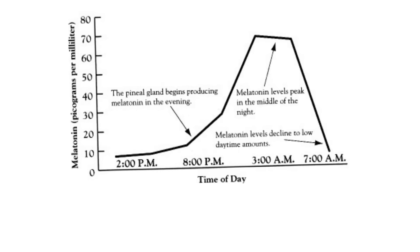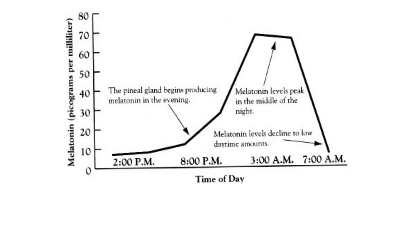Melatonin levels in the blood are increased at night. This graph shows melatonin in picograms per milliliter of serum or plasma. The pineal gland begins producing melatonin when it gets dark, peaks in the middle of the night, and then once light comes on, melatonin is degraded in the blood — like any molecule with a certain half-life — and drops down to very low levels.